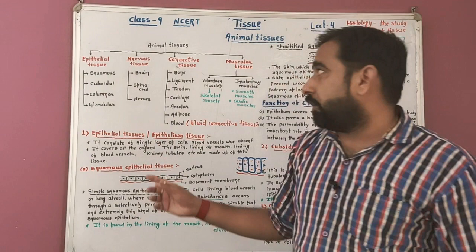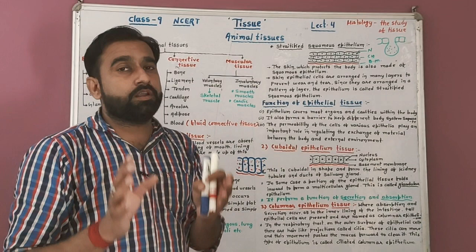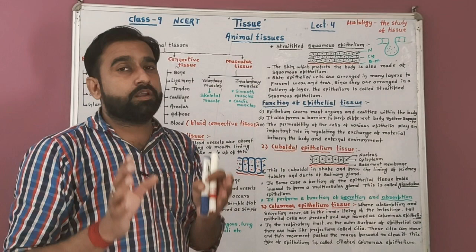So students, today we discussed epithelial tissue, the classification of animal tissue, and the various types of epithelial tissue present in the human body. In the next video, we will deal with nervous tissue, connective tissue, and muscular tissue. Thank you students.